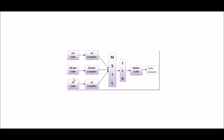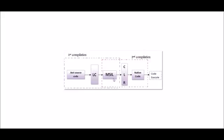What is .NET source code? Here are three example languages: C#, VB.NET, and J#. There are more than 60 languages — 63 in total. For every language there is a respective language compiler. For C# code there is a C# compiler, for VB.NET there is a VB.NET compiler, and so on. These compilers generate MSIL from their respective source code. That is the first compilation.